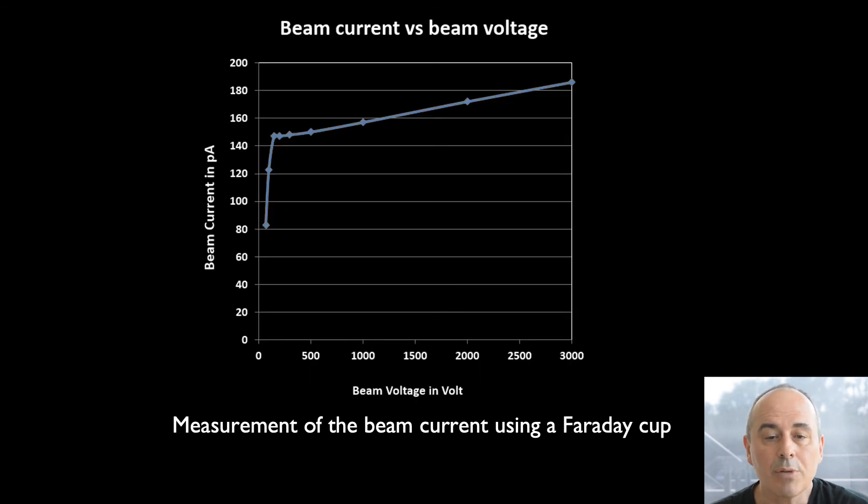An additional measurement of beam current was done to make sure that images taken at different beam voltages are comparable. The beam current is rather stable at acceleration voltages between 150 V and 500 V. It only changes from 147 picoamps to 150 picoamps at these beam voltages. At acceleration voltages below 100 V it drops to only 84% of the beam current at 150 V and at 70 V the current drops to 56% of the value at 150 V.